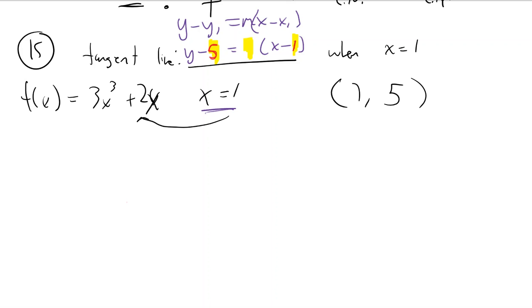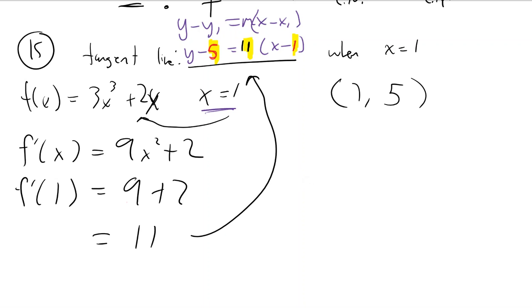Right, and then if you need slope, you need derivative. So, derivative, I want to know the derivative at this x value. Looks like that's 11, and the derivative at 1 is telling us the instantaneous rate of change at 1. So, that's what I would go with.